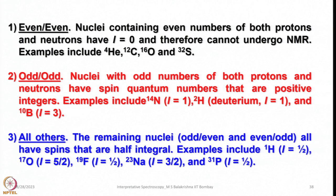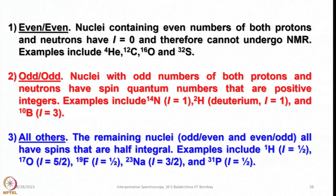I have classified different types of nuclei into three categories. Nuclei with even numbers of both protons and neutrons have I = 0 and therefore cannot undergo NMR. Whenever we come across nuclei having even numbers of both protons and neutrons, they have zero nuclear spin and we cannot use them in NMR measurement. Examples include ⁴He, ¹²C, ¹⁶O, and ³²S.